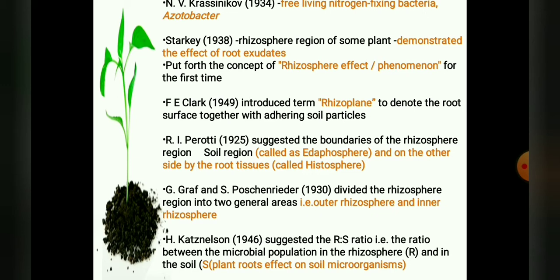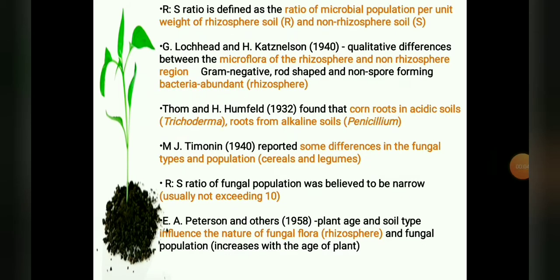In 1946, H. Cards Nelson suggested the RS ratio, that is the ratio between the microbial population in the rhizosphere (R) and in the soil (S), to find out the degree or extent of the plant root effect on soil microorganisms. The RS ratio gives a good picture of the relative stimulation of microorganisms in the rhizosphere of different plant species, and is defined as the ratio of the microbial population per unit weight of the rhizosphere soil to the microbial population per unit weight of the adjacent non-rhizosphere soil region.